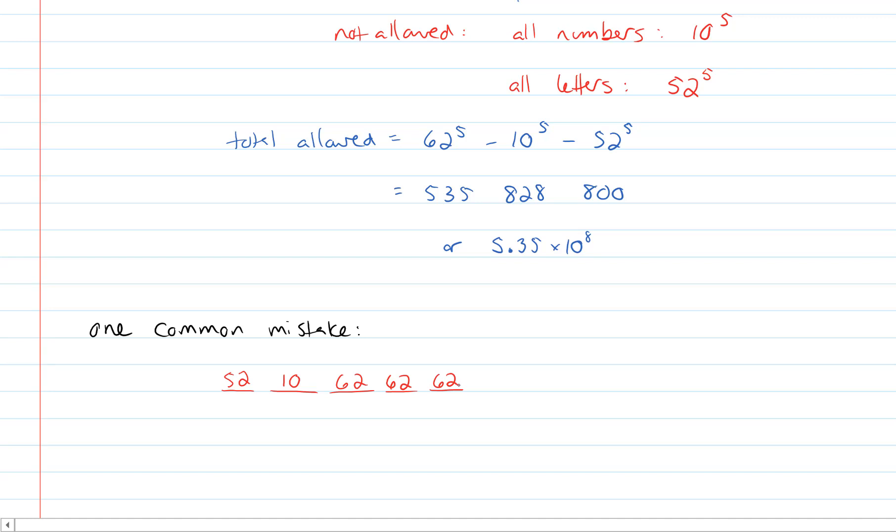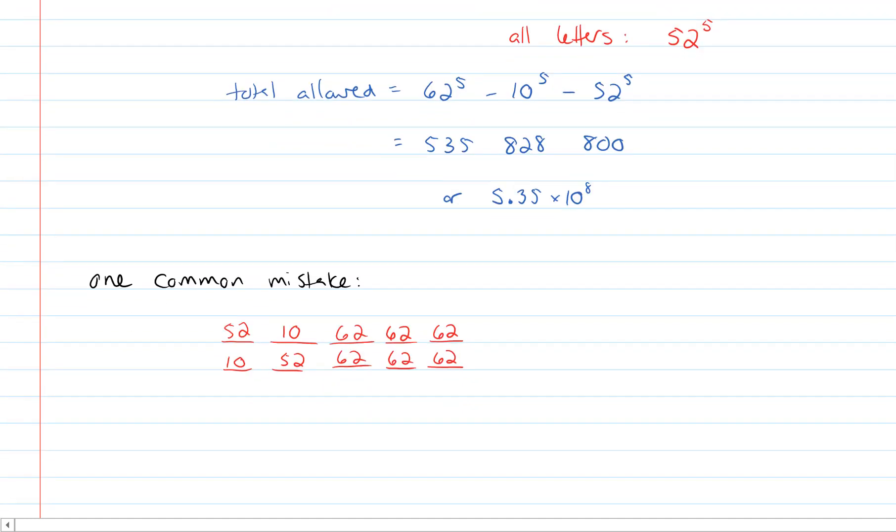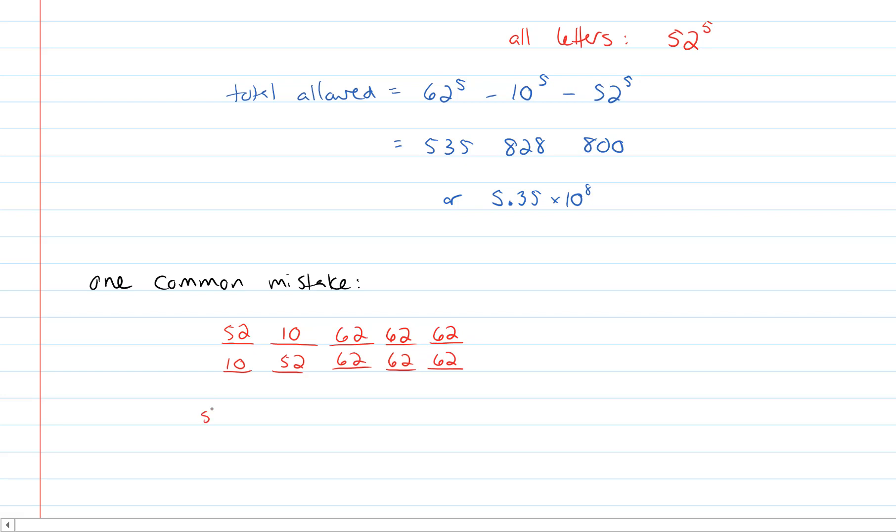But notice that there's nothing saying that you couldn't have a number in the first slot and no letter in the second. And so you would then have to do this. But the problem is that you're still not counting. So still you're leaving out other valid passwords, like AAAA2, which is not a good password, but one in which the number is in the last slot.